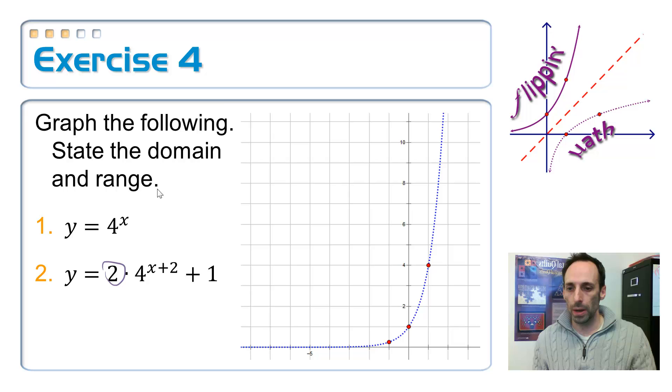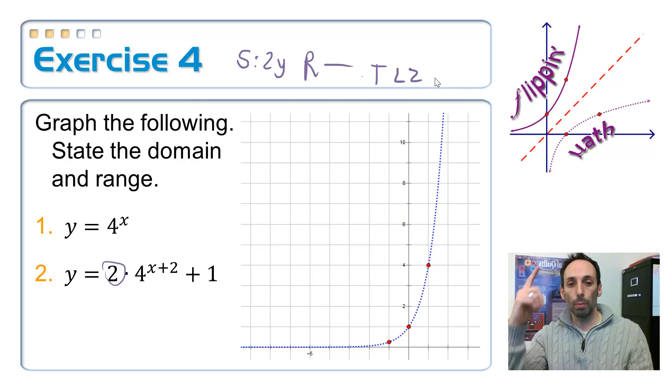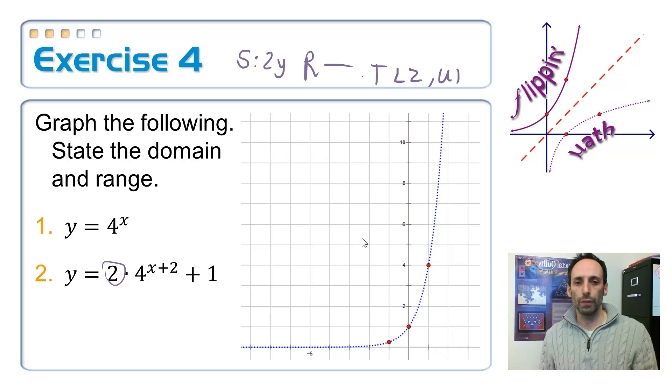Now I'm going to do SRT transformations on that sucker. So looking at this, here's my A value. So my S, I am S-ing it by 2. So 2 times the Y coordinate, always times the Y coordinate. Are we reflecting it? Well, since the 2 is positive, we are not. And then finally translating it, I have a plus 2 on the X. So that actually means left 2. And then a up 1, plus 1. So up 1. Point by point on the three points that I have right here on my graph. Okay. Before I do that, though, let's go ahead and translate where that asymptote is going to be.